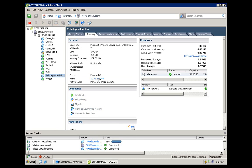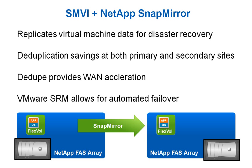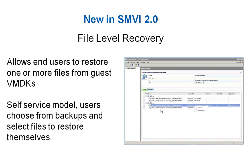SMVI can be combined with NetApp SnapMirror to provide simple and efficient disaster recovery for virtual machines. SnapMirror is deduplication-aware replication, delivering savings in both storage for the DR site and in network bandwidth, and can be combined with VMware Site Recovery Manager for automated failover.